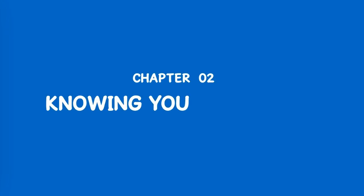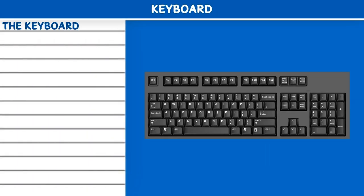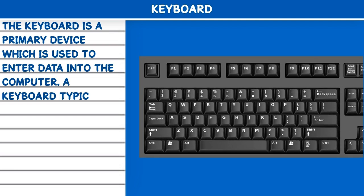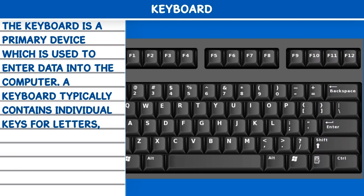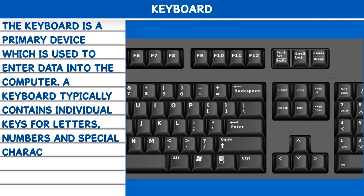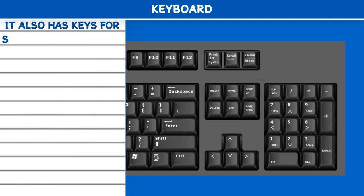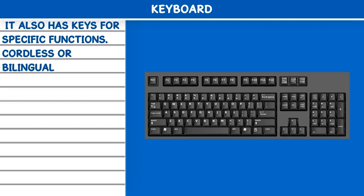Chapter 2: Knowing Your Keyboard and Mouse. The keyboard is a primary device which is used to enter data into the computer. A keyboard typically contains individual keys for letters, numbers, and special characters. It also has keys for specific functions. Cordless or bilingual keyboards are also available nowadays.